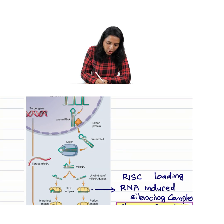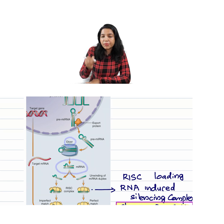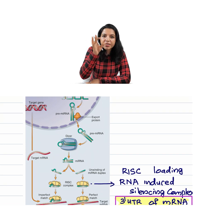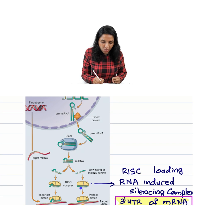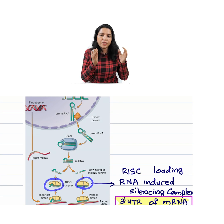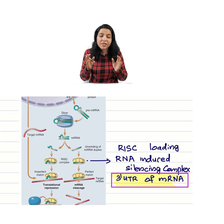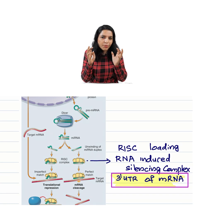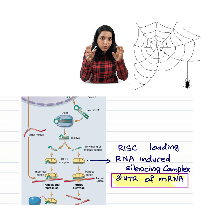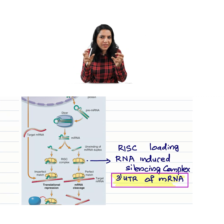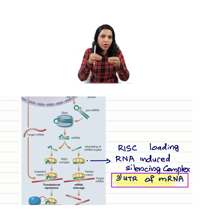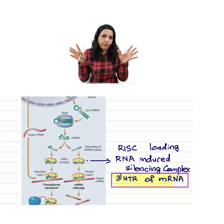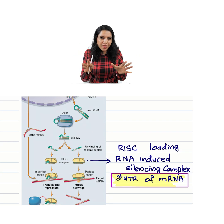The pre-microRNA is exported out and trimmed by an enzyme called Dicer, giving us a double-stranded microRNA. This is then unwound and loaded into a machine called RISC — RNA Induced Silencing Complex. Think of it like a spider in a cobweb waiting for its prey; the microRNA is loaded into this cobweb called RISC.